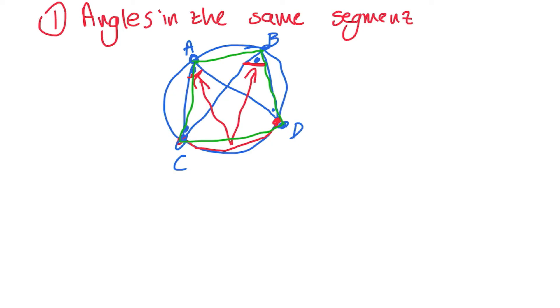Angles in the same segment is a property of a cyclic quad, which means to prove that ABCD is a cyclic quad, you can just prove that angle A is equal to angle B. That's the first thing you can consider.